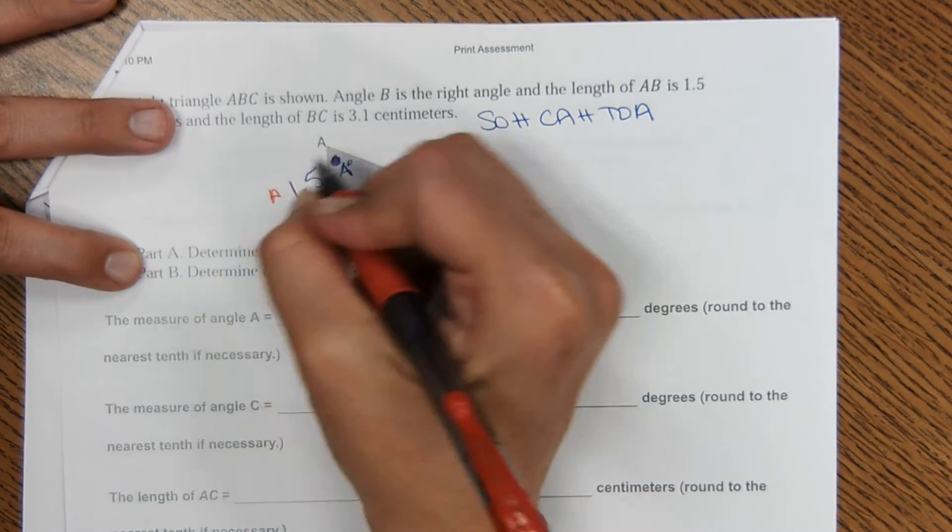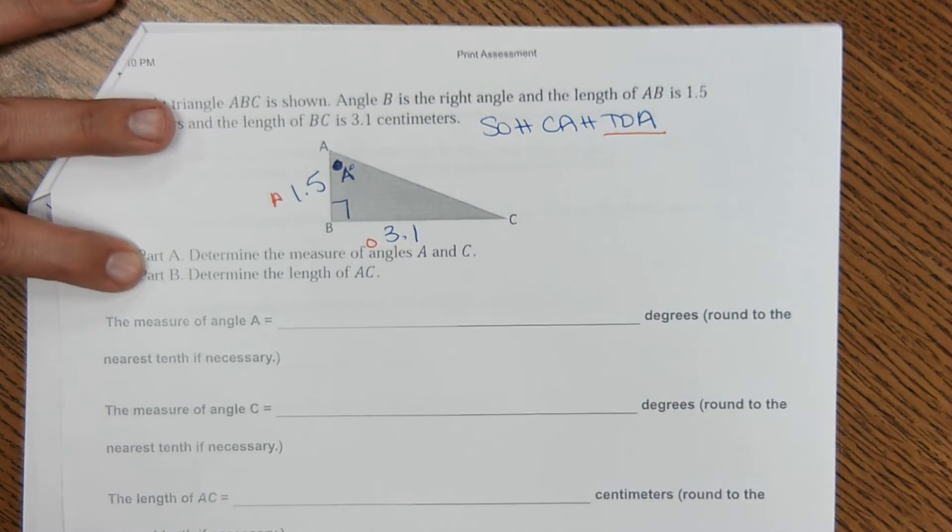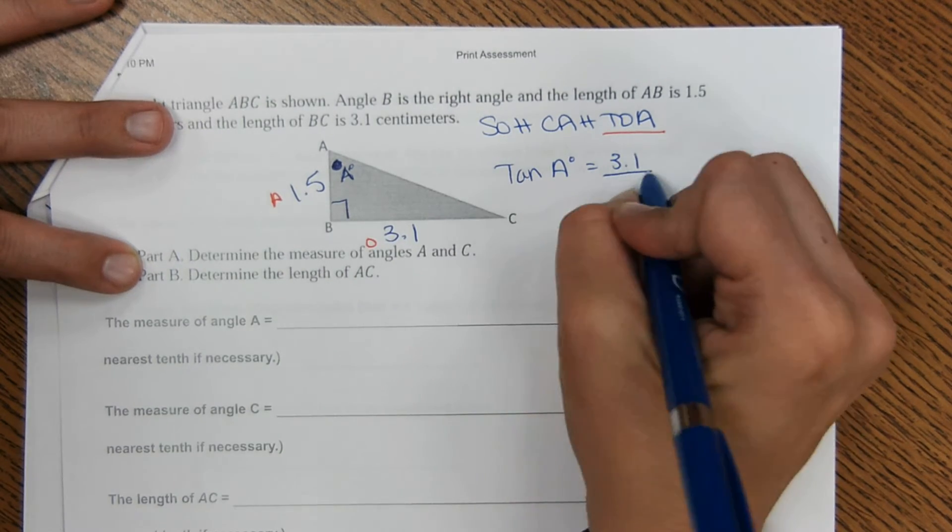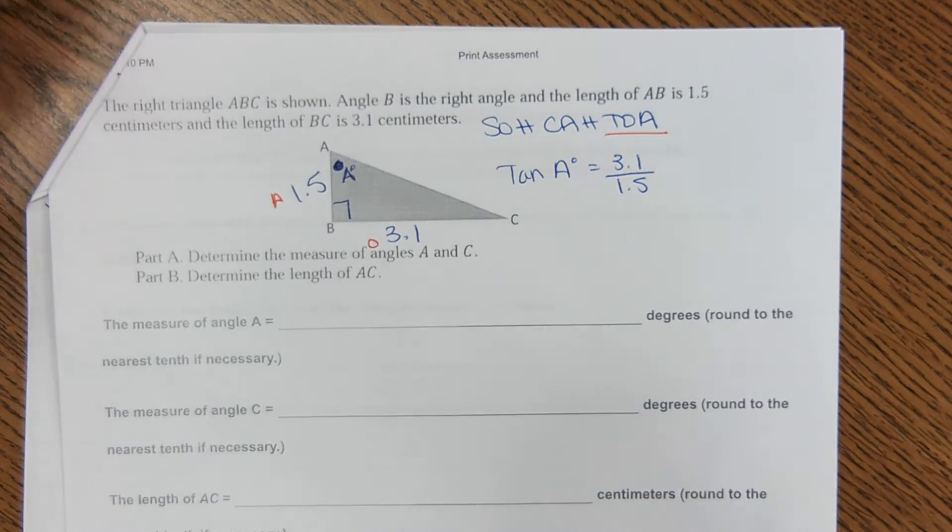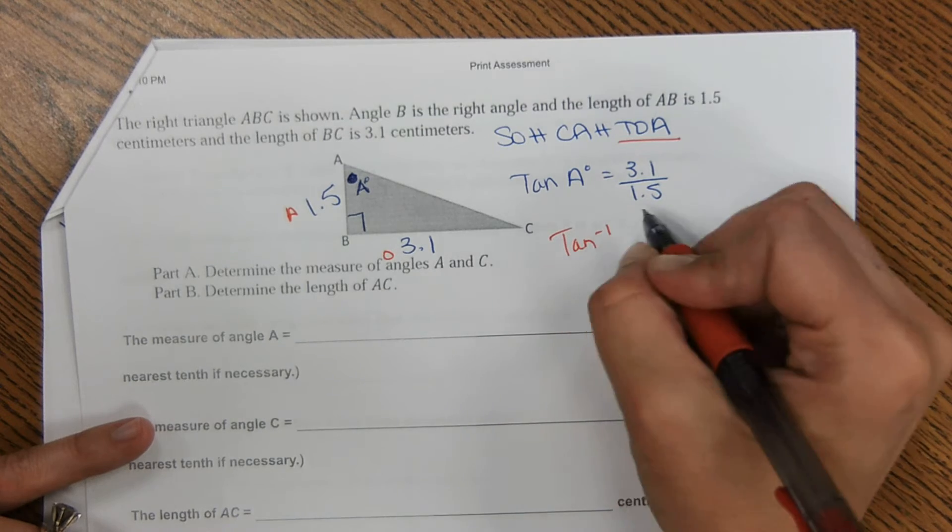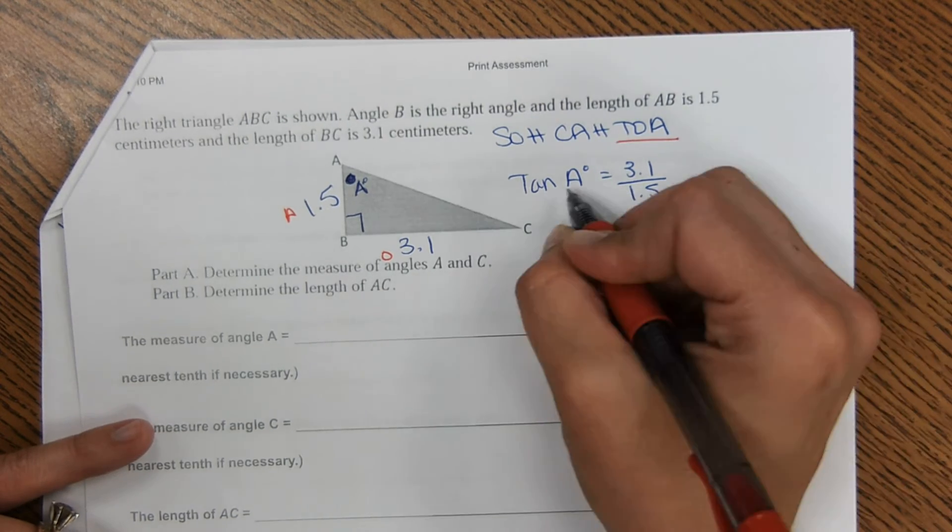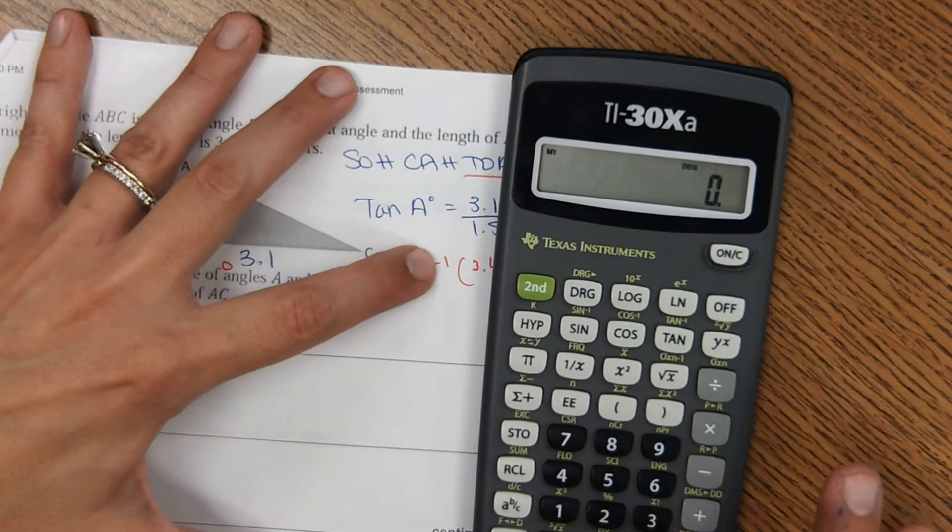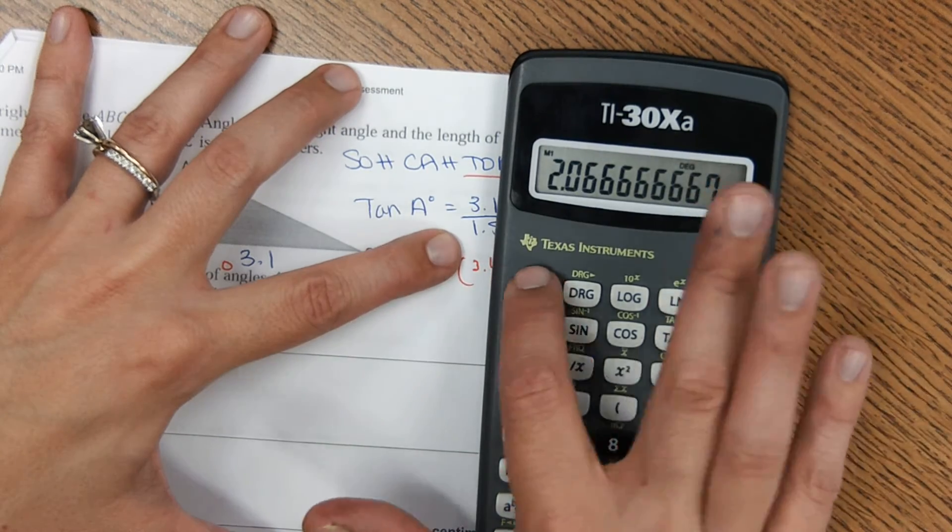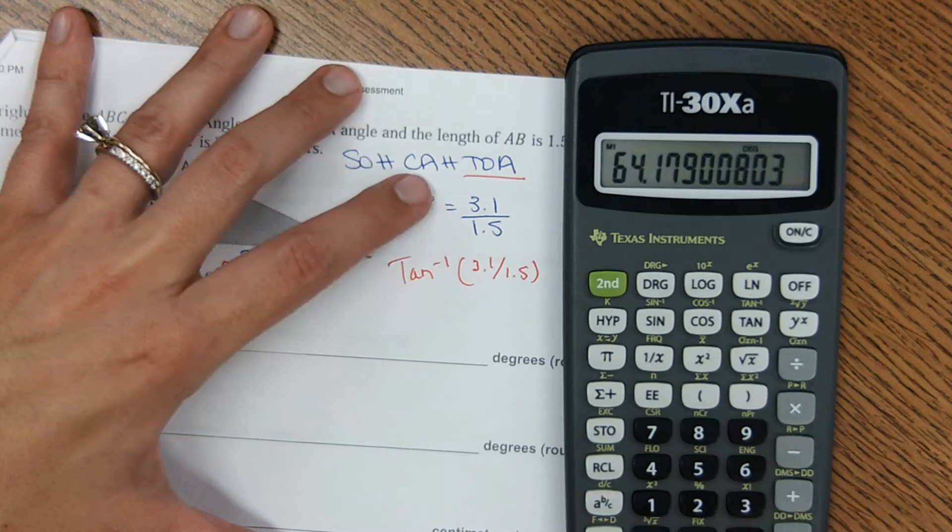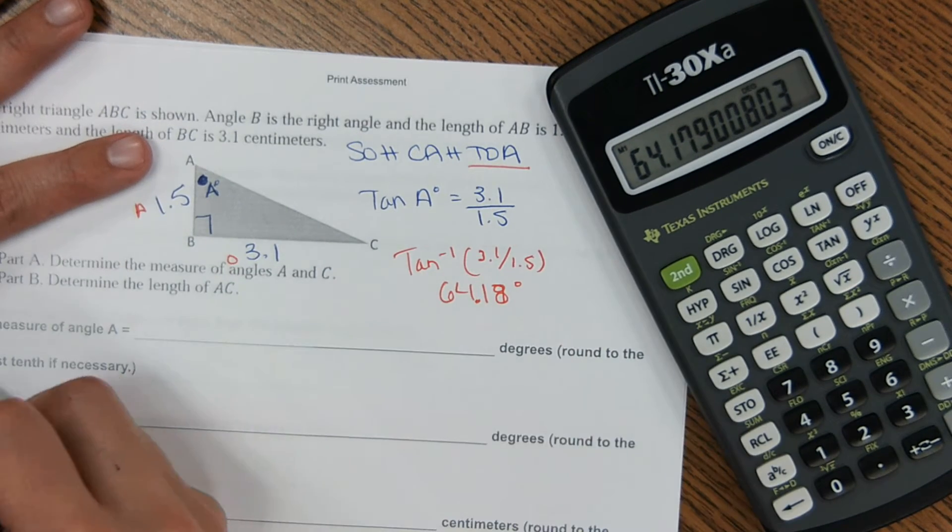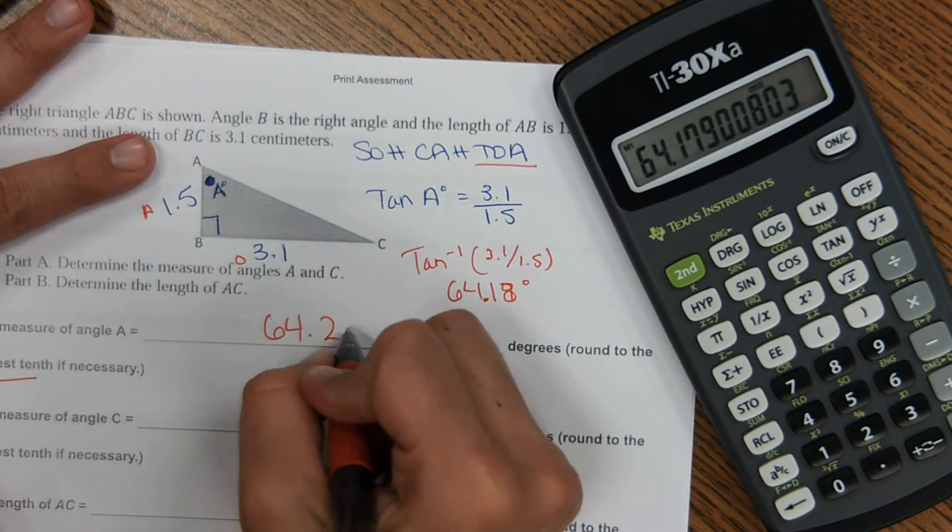So based on this angle, we have opposite adjacent. So we're going to use tangent. So tangent of a degrees is opposite over adjacent, so 3.1 over 1.5. And then in the calculator, what you do is you're going to use inverse. So tan to the negative 1, 3.1 over 1.5. And you do that when you're trying to find an angle measure like that. So here I'm going to do 3.1 divided by 1.5. And then second tan, the inverse, to get 64.17 or 1.8 degrees. It says round to the nearest tenth, so we'll do 64.2 degrees.